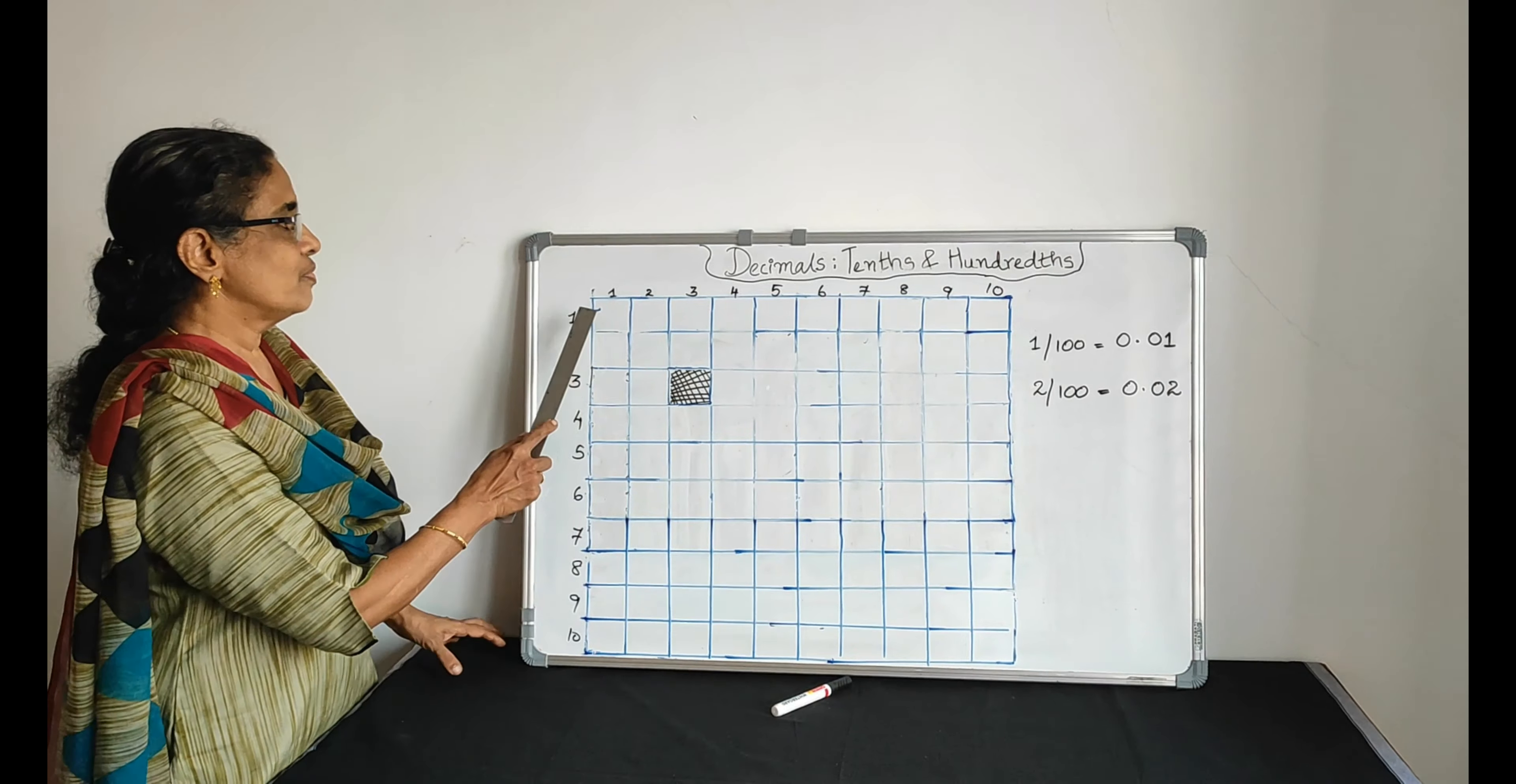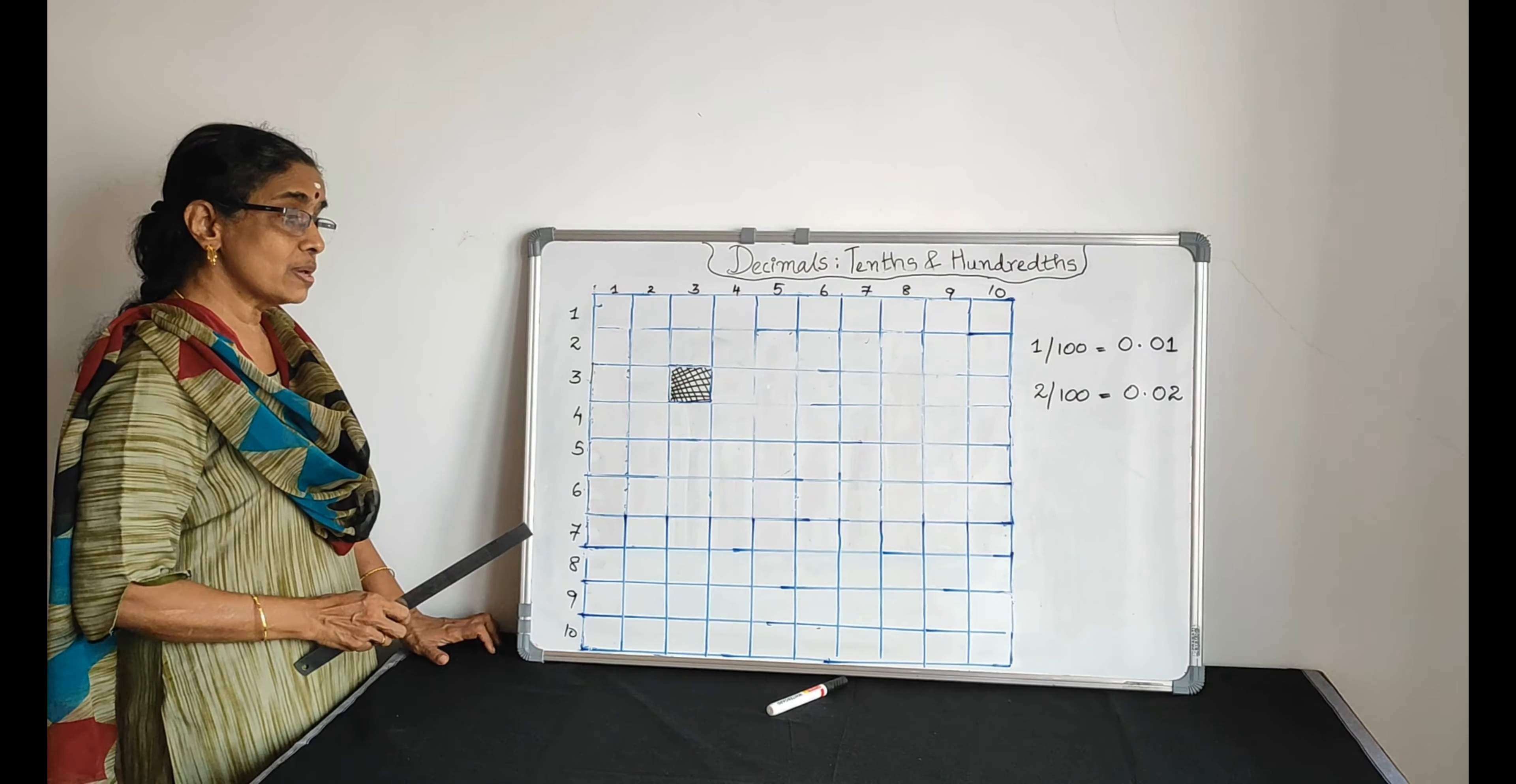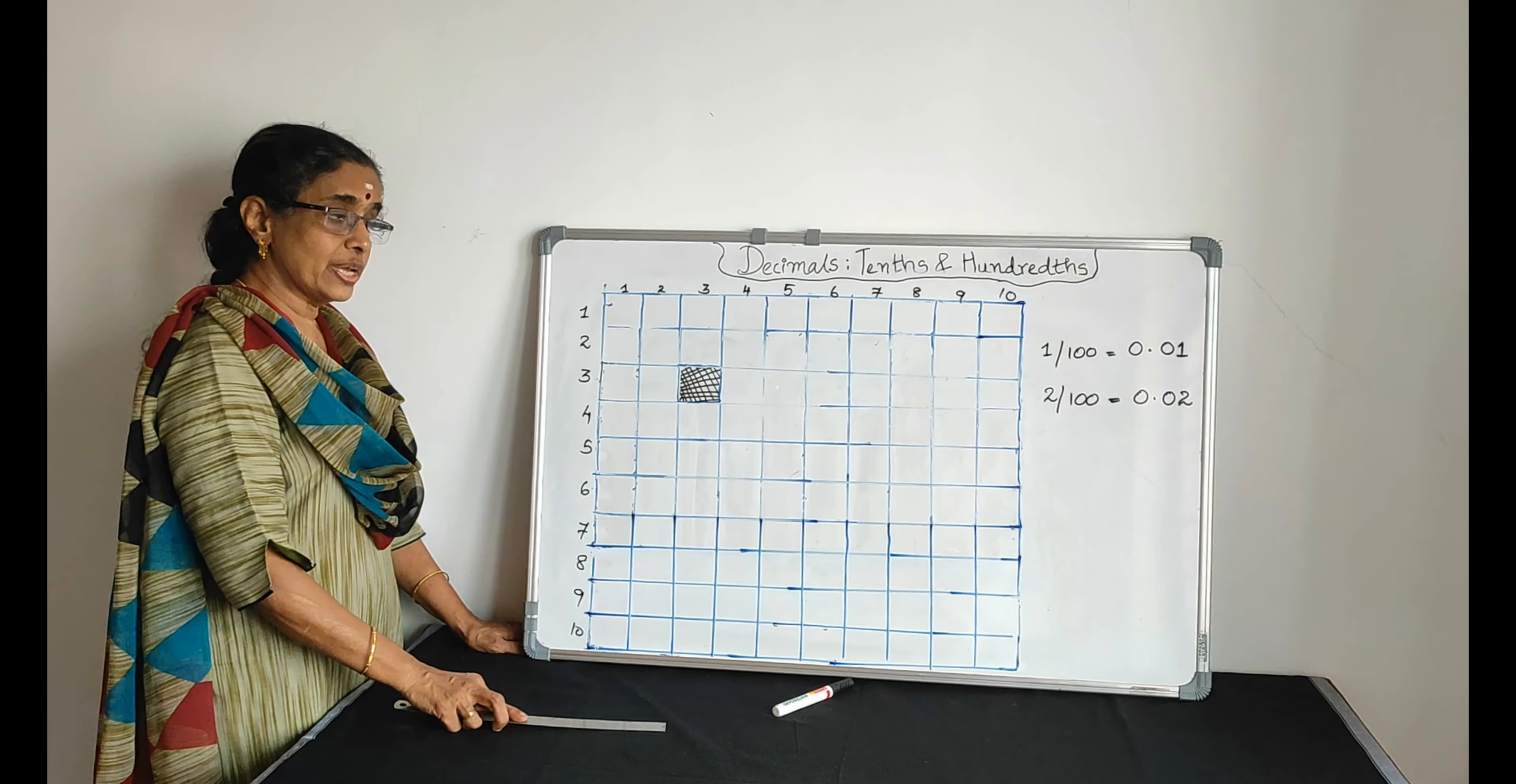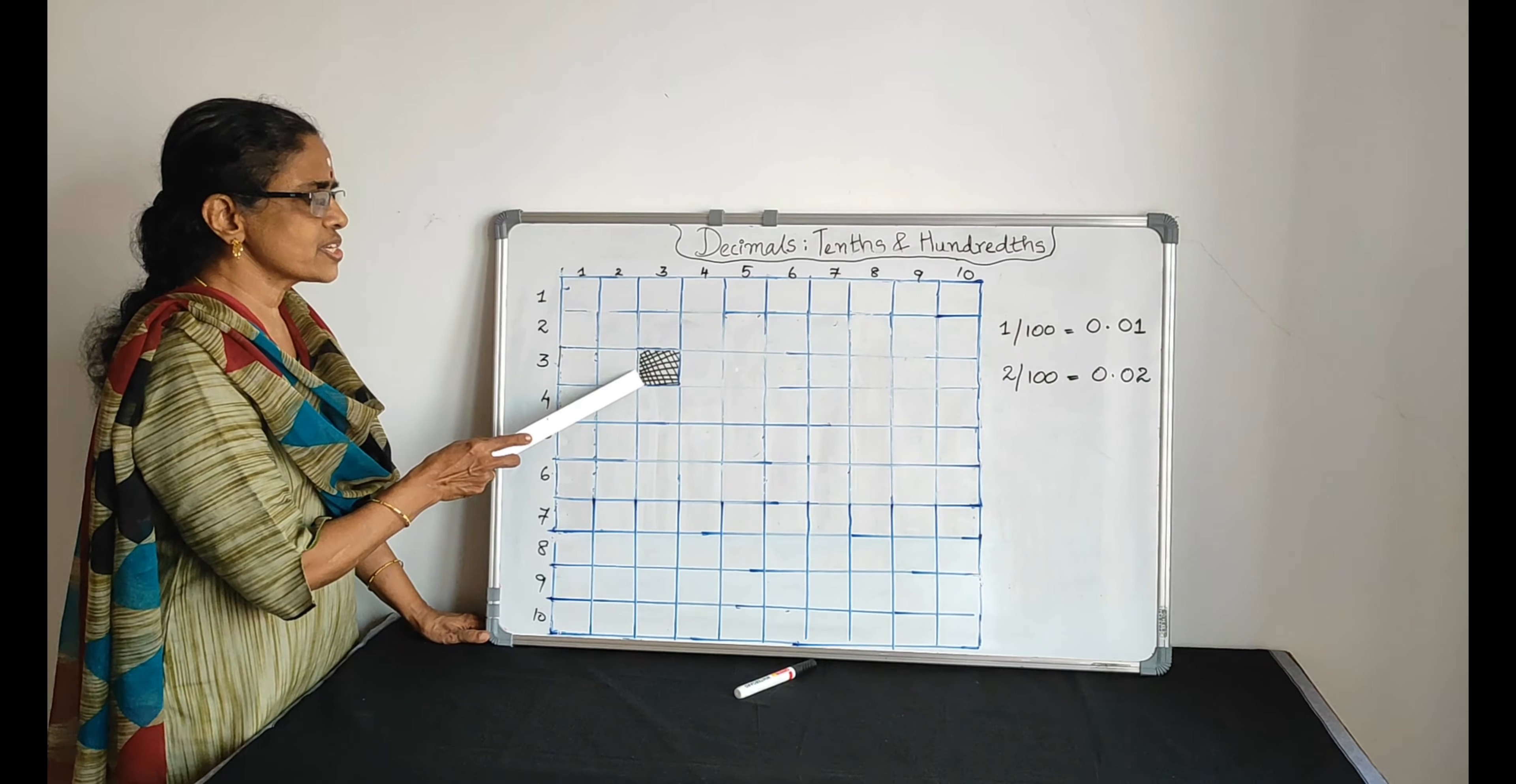Here we have ten rows. We have ten rows, and how many columns are there? There are ten columns. So totally ten times ten—we have hundred equal parts. We have hundred equal parts.